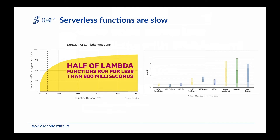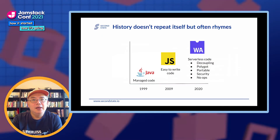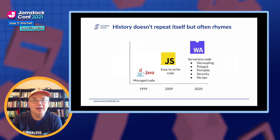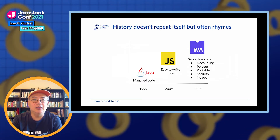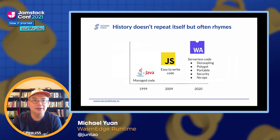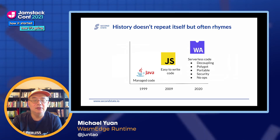That's one of the problems with serverless. So how do we solve that? As I discussed, one of the primary reasons is the use of Docker, application containers, or VMs as the container for the serverless functions. They are inherently slow.